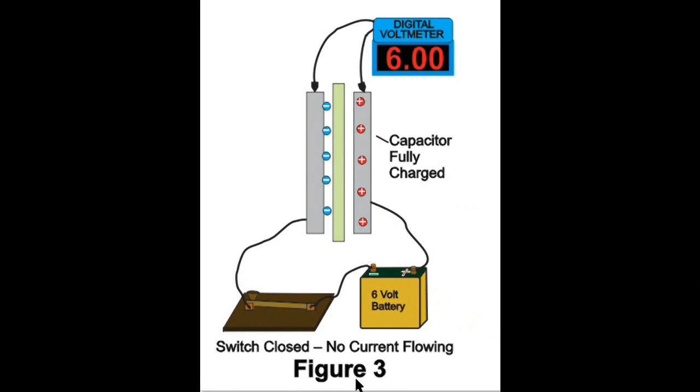Figure 3 shows the fully charged condition of the capacitor with the battery still connected. Notice the switch is still closed. While the battery is connected, there is no current flowing. Why? Because the capacitor now has reached the same voltage, 6 volts, as the battery.